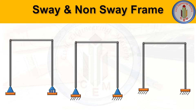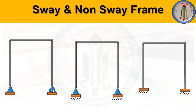Before starting with sway and non-sway frames, let's discuss what a frame is. A frame is a structure that connects all structural elements to make a framed structure. In an RCC frame, we have beams, columns, and slabs. In a steel frame, we have ties and struts. Each structural member has different behavior — a beam is a flexural member, a column is a compression member, a strut is a compression member, and a tie is a tension member.